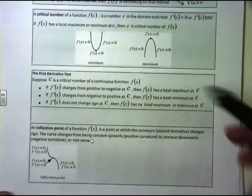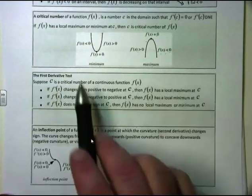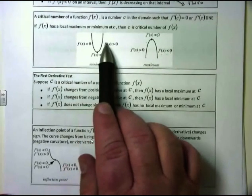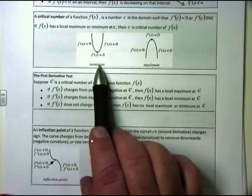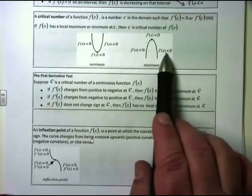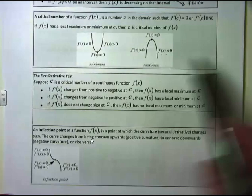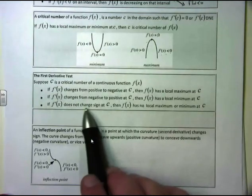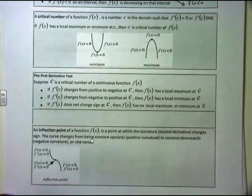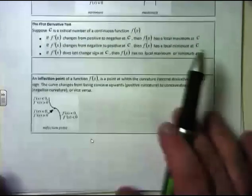So you can see how this first derivative test works: changing from negative slope to positive slope gives you minimum critical numbers. Going from positive slopes to negative slopes gives you maximum critical numbers. If you don't change signs on your derivative, then you don't have a max or min — that's the first derivative test.